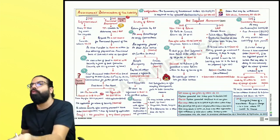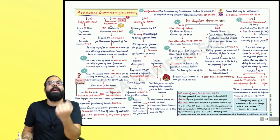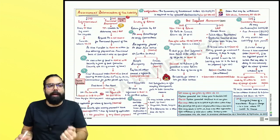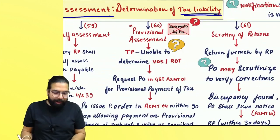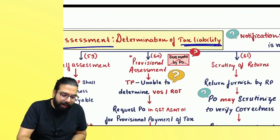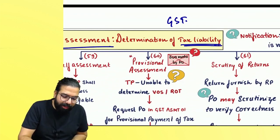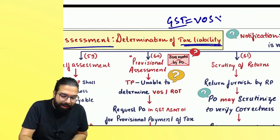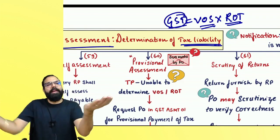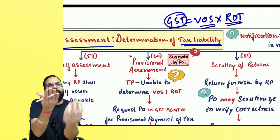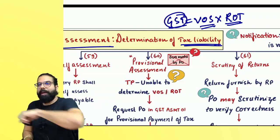Assessment means determination of the tax liability. How do you determine tax liability? GST is equal to value of supply multiplied by the rate of tax. Value multiplied by the rate of tax will give you the liability. You will use your credit and pay the remaining amount.